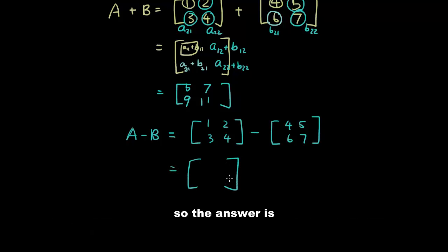So the answer is 1 minus 4 is negative 3, 3 minus 6 is negative 3, 2 minus 5 is negative 3, 4 minus 7 is negative 3. So the answer is negative 3 for every single element.